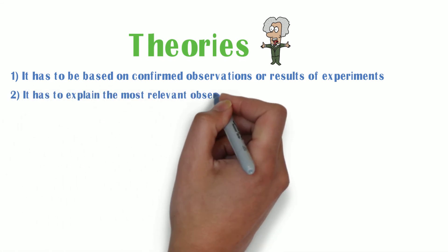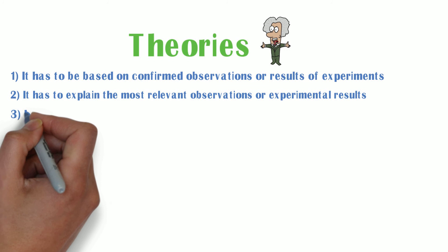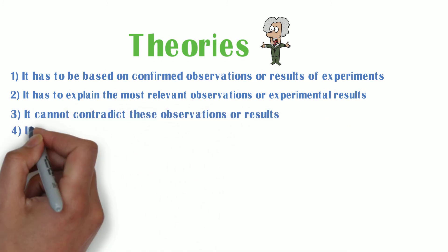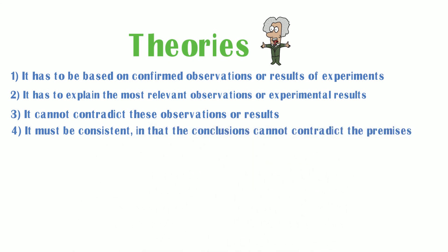Two, it has to explain the most relevant observations or experimental results. Three, it cannot contradict these observations or results. Four, it must be consistent, in that the conclusions cannot contradict the premises.